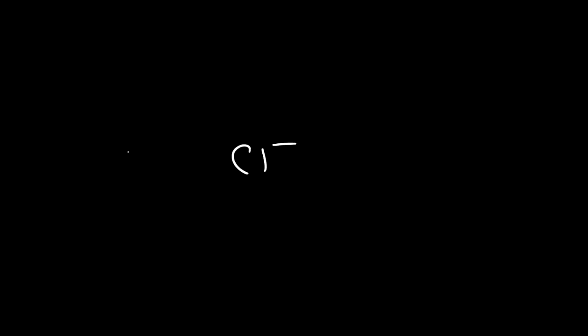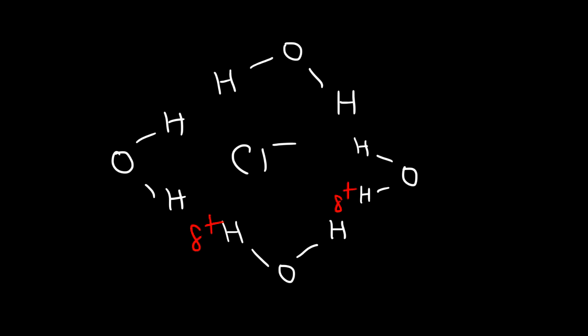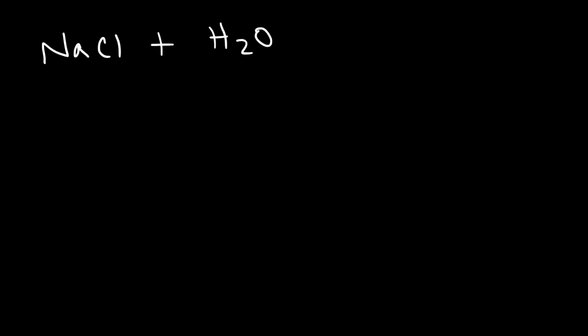In the case of water, the hydrogen part of water will be attracted to the chloride ion. Hydrogen has a partial positive charge and chlorine has a negative charge. So this interaction — that's also an ion dipole interaction. Ion dipole interactions can occur whenever you mix an ionic compound with a polar substance. Water is a polar substance and sodium chloride is an ionic compound, so in salt water you're going to have ion dipole interactions.